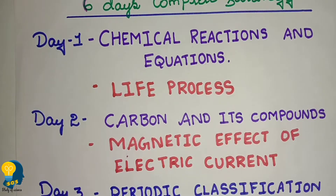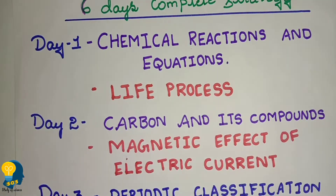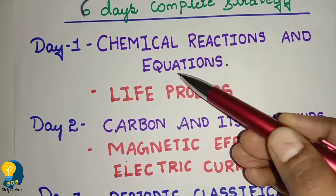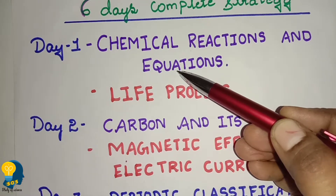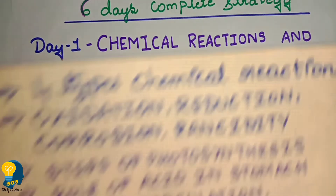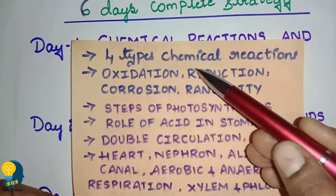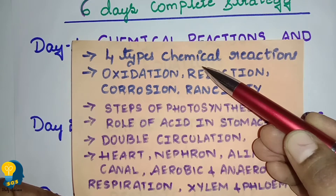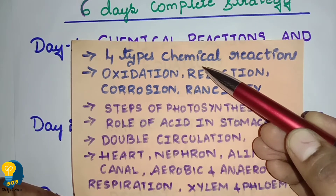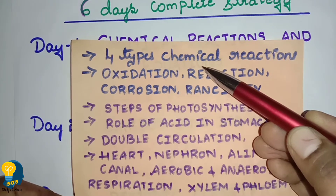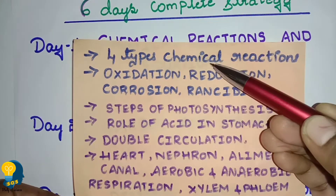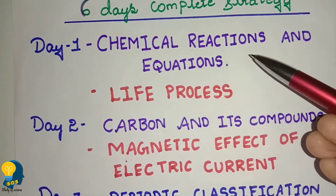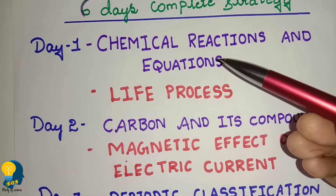So this is the six-day complete strategy. Day one — what do you need to study? On day one, focus on Chemical Reactions and Equations. In this lesson, you need to know four types of chemical equations: combination, decomposition, displacement, and double displacement. Also focus on oxidation, reduction, corrosion, and rancidity topics. Learn to balance equations as well.